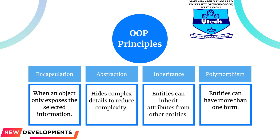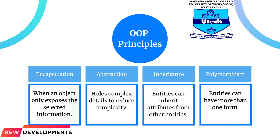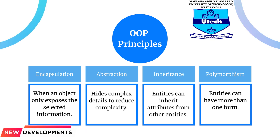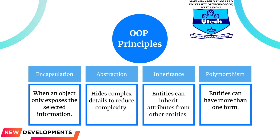Polymorphism: objects are designed to share behaviors and they can take on more than one form. The program will determine which meaning or usage is necessary for each execution of that object from a parent class, reducing the need to duplicate code. A child class is then created which extends the functionality of the parent class. Polymorphism allows different types of objects to pass through the same interface.